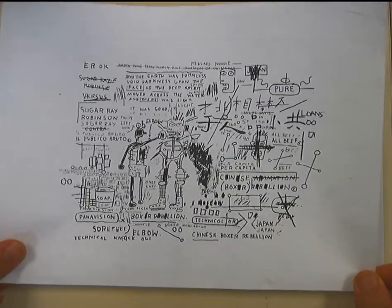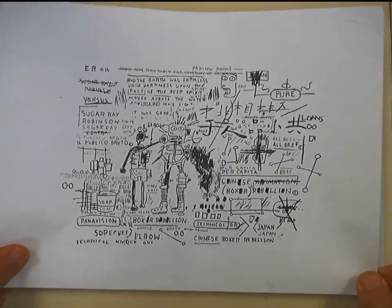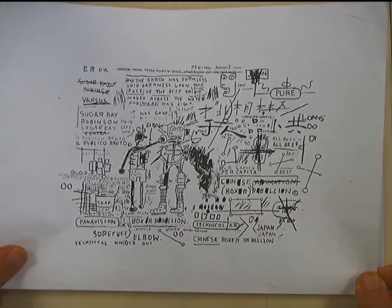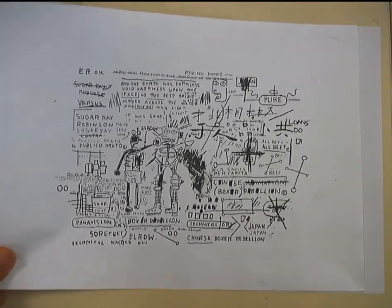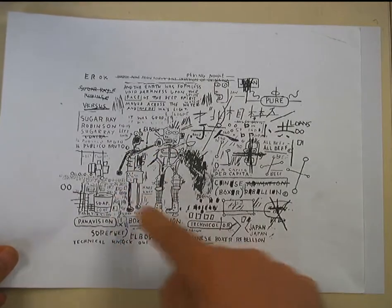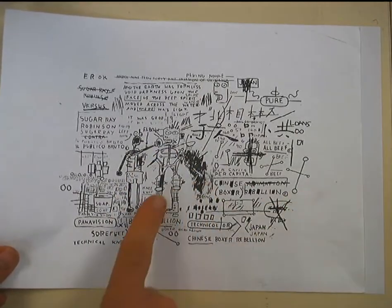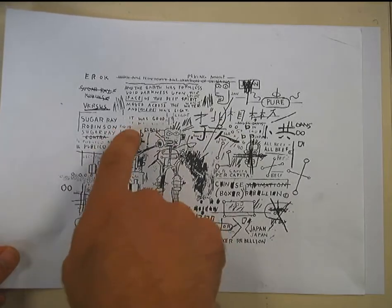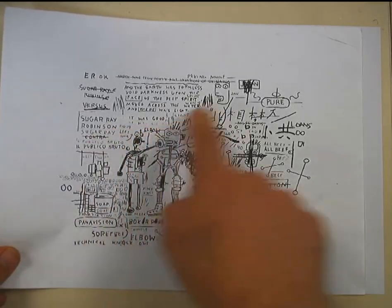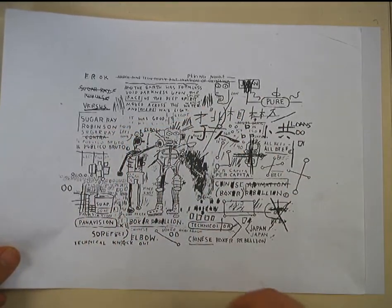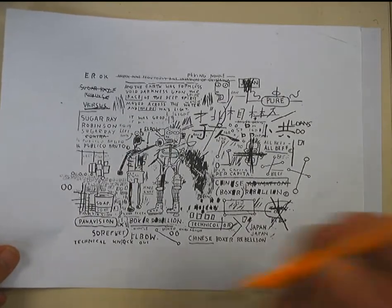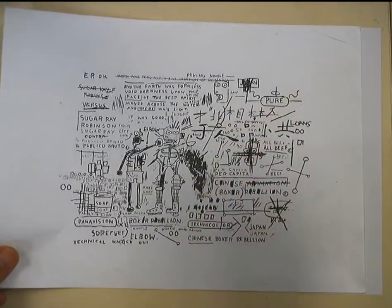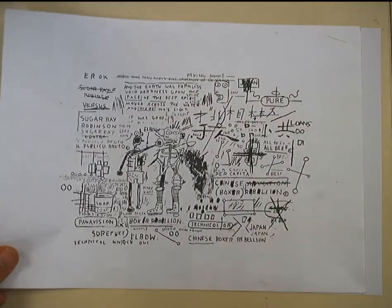Let me show you some examples before we get started. We are going to model our drawings after Basquiat's drawings, and this is a copy of one of his. Notice: lots of words, lots of little sketches, lots of variety in line quality. What I mean by that is there's some dark lines, some light lines, some lines that fade out, some short, some long. So get to know your pencil as you do this. Push down hard, do lots of different varieties of lines.